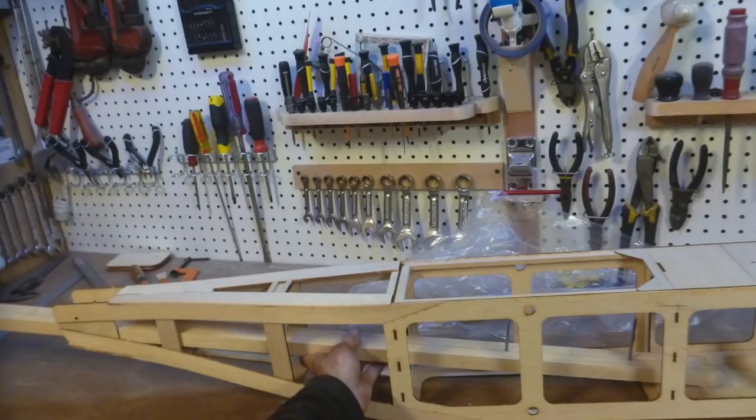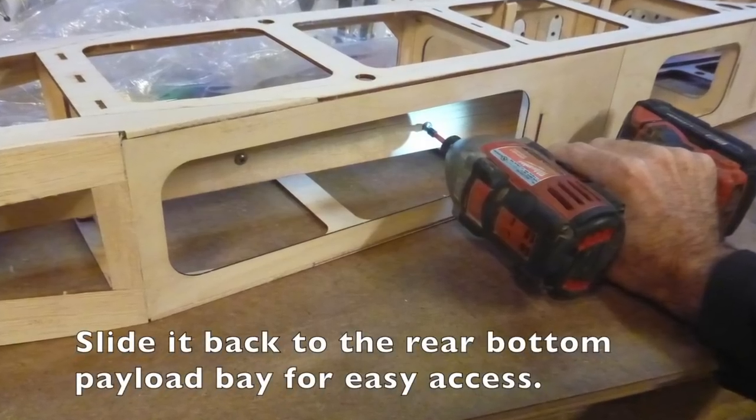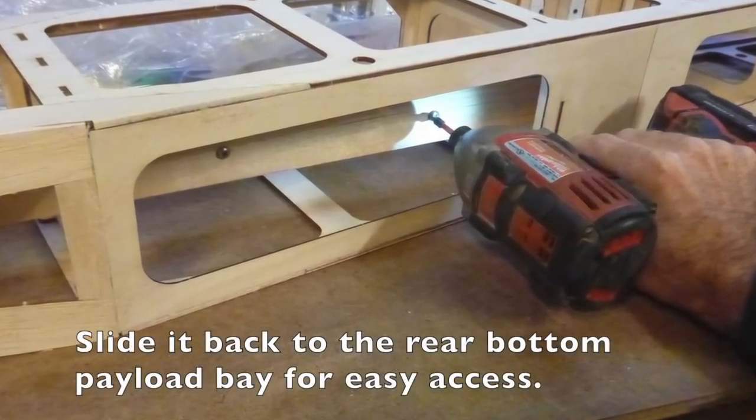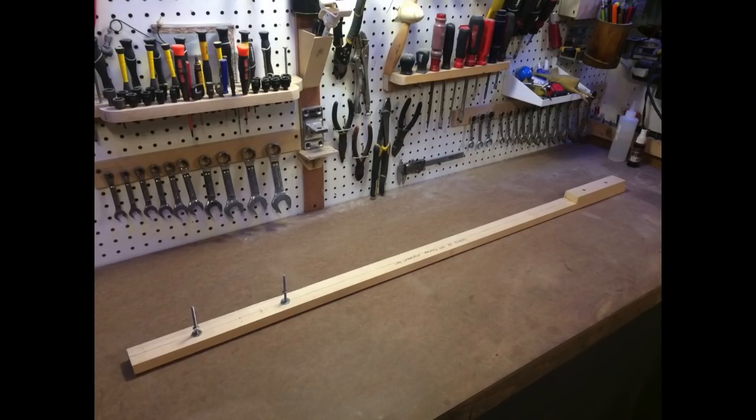The clamps and jig can now be removed. To do so, it will be necessary to remove the number 8 screws from the jig. It will then slide right out. Set the jig aside for your next build, or if you ever have to realign the fuselage after modification or repair.